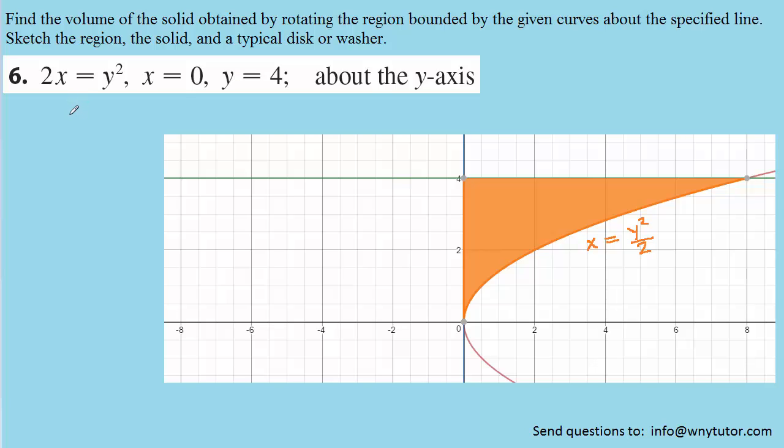So here are the graphs of those three curves. The first curve, 2x equals y squared, is represented by this sideways opening parabola that we can see here has an orange color to it. Now we've written the equation as x equals y squared over 2.